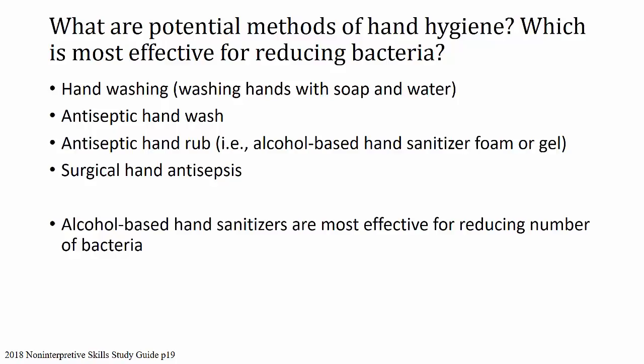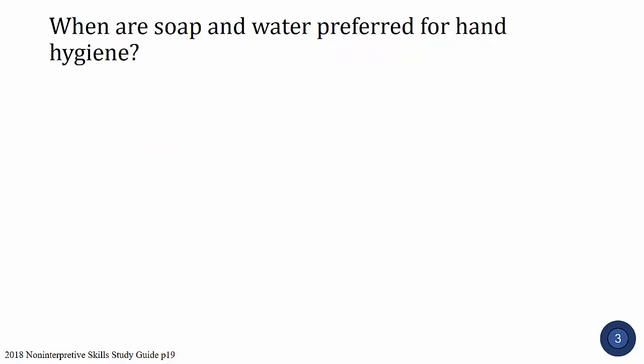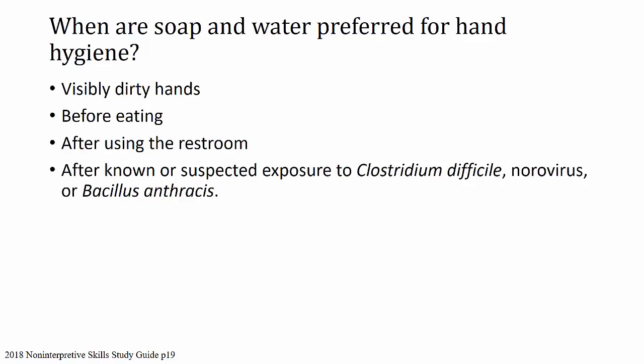Next question: when are soap and water preferred for hand hygiene? Soap and water are preferred when you have visibly dirty hands, anytime before you eat, anytime after you use the restroom. This is also important after known or suspected exposure to C. difficile, norovirus, or Bacillus anthracis — so if there's anthrax, you've got to wash your hands.